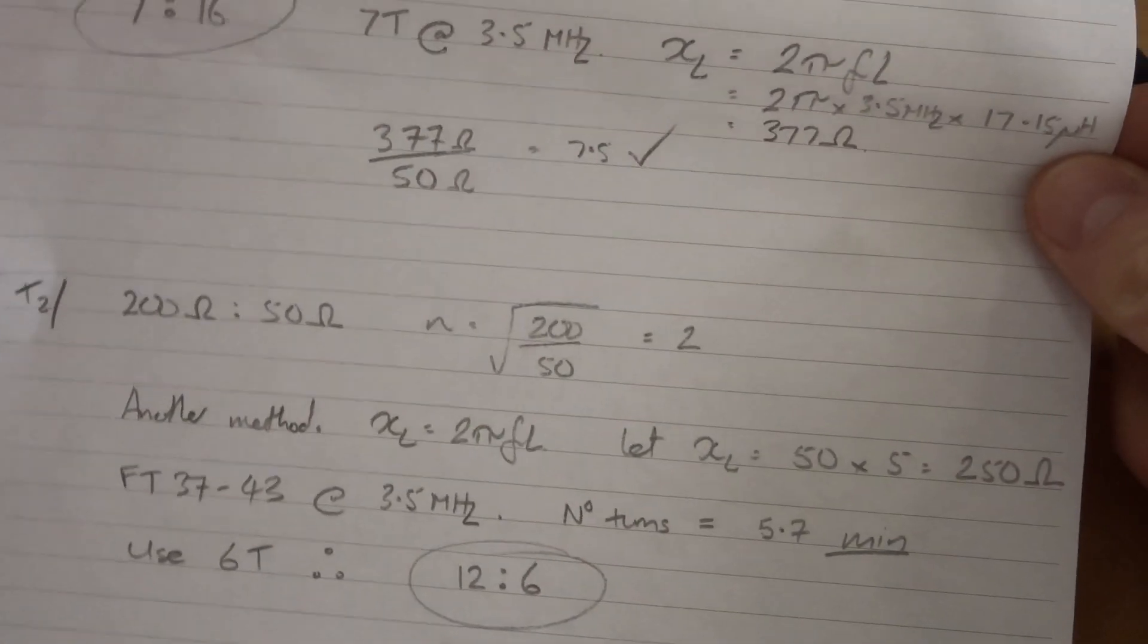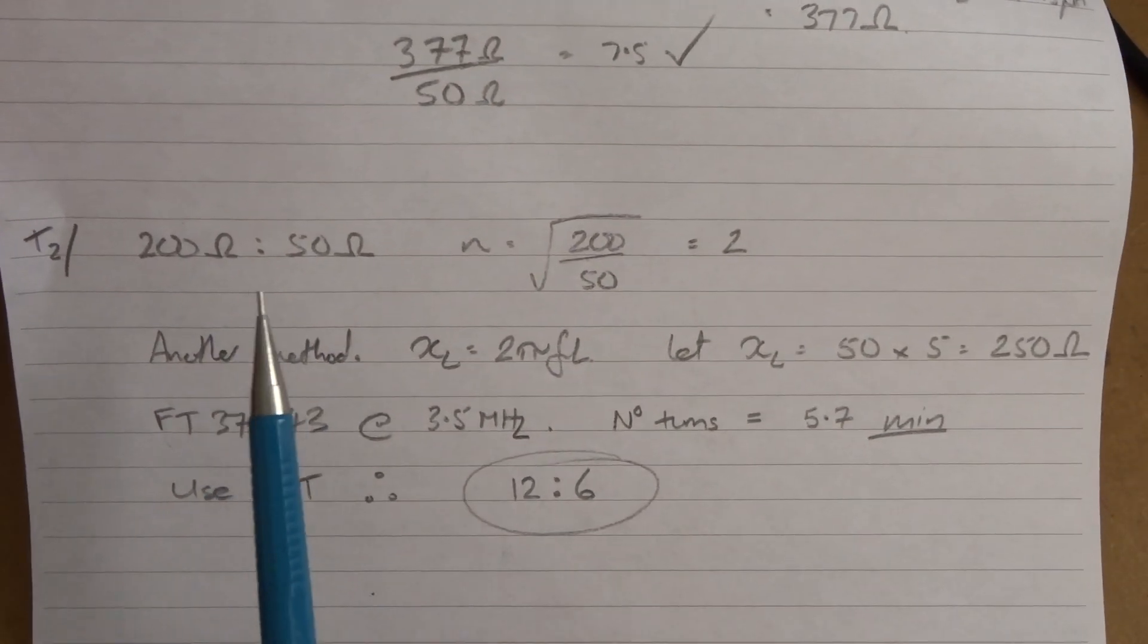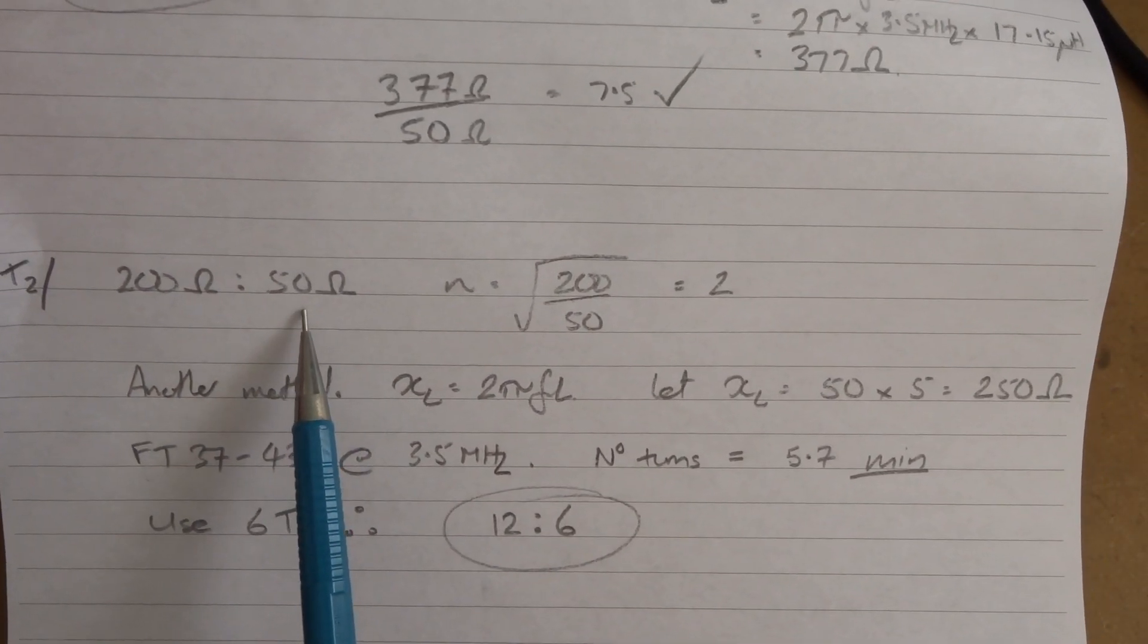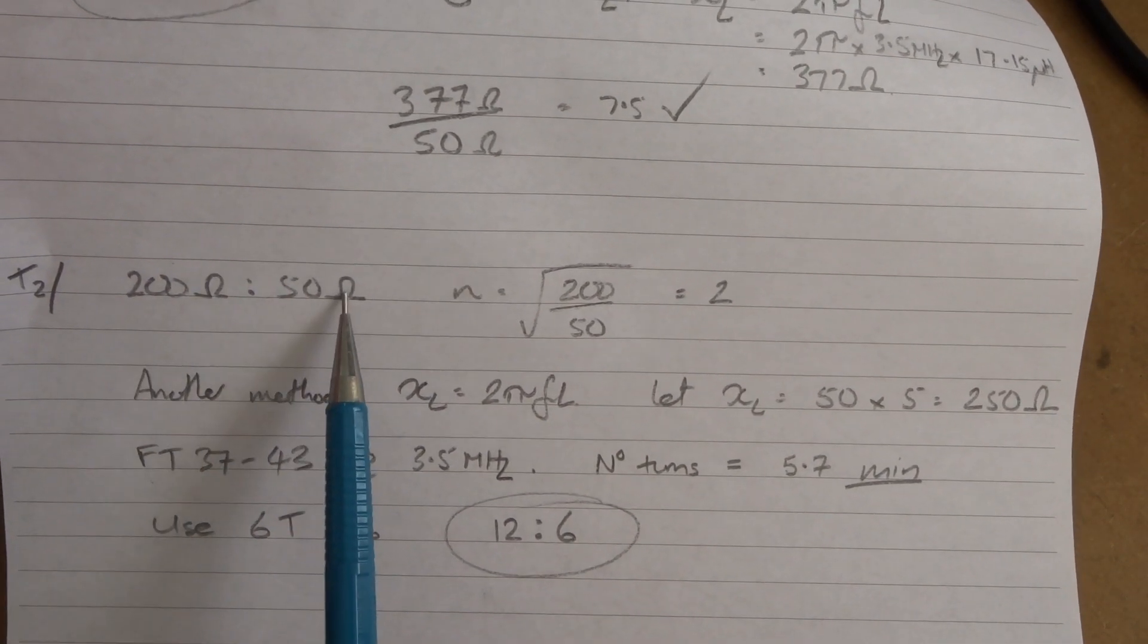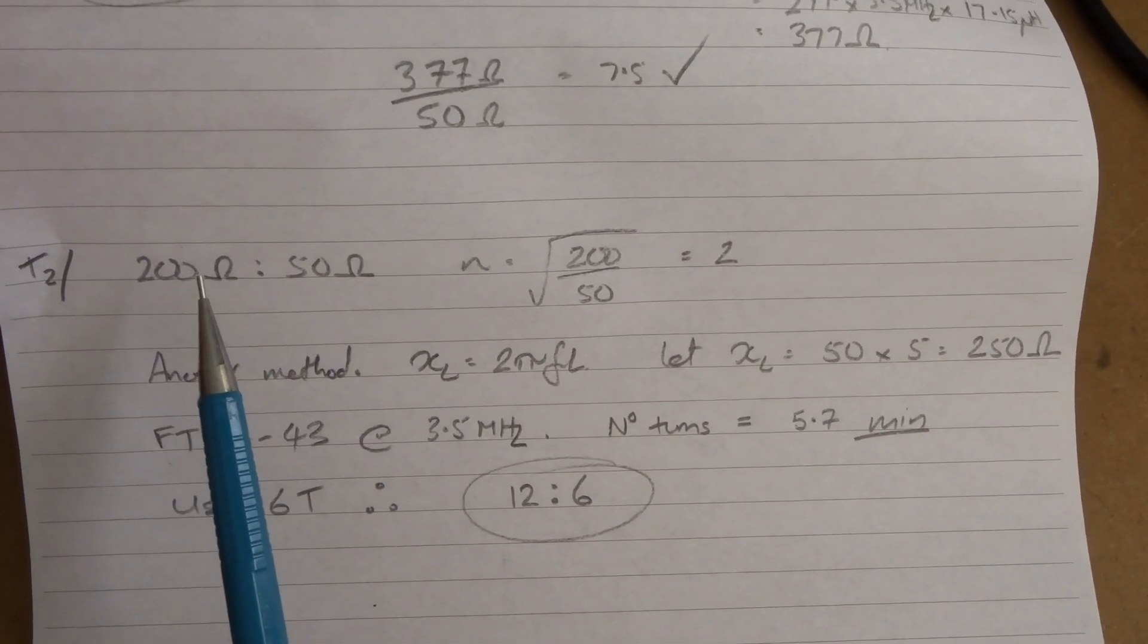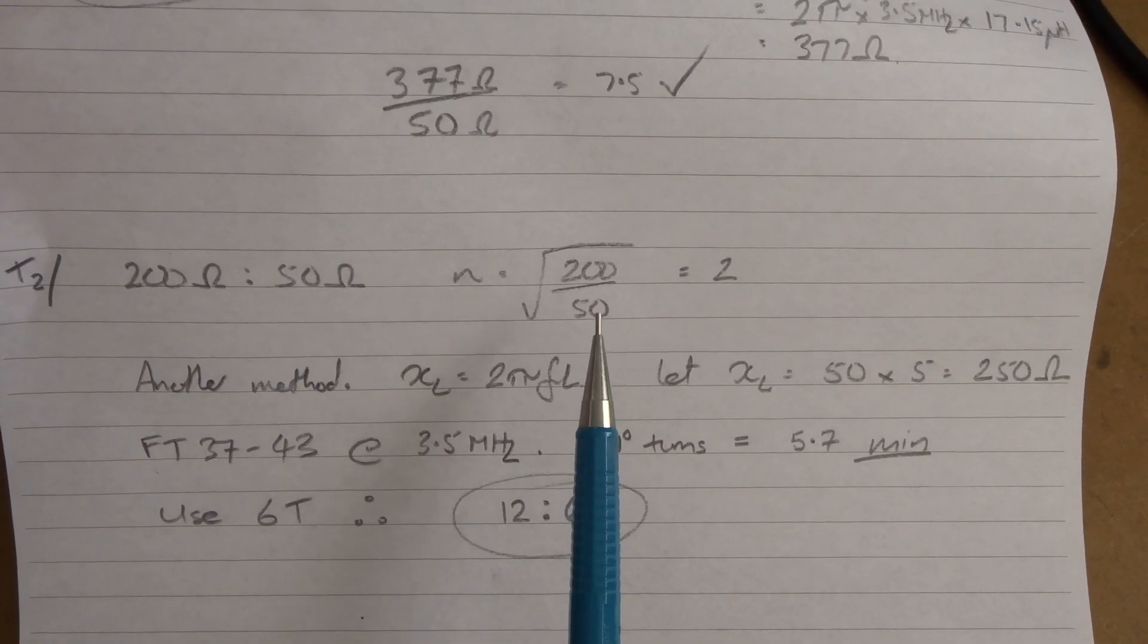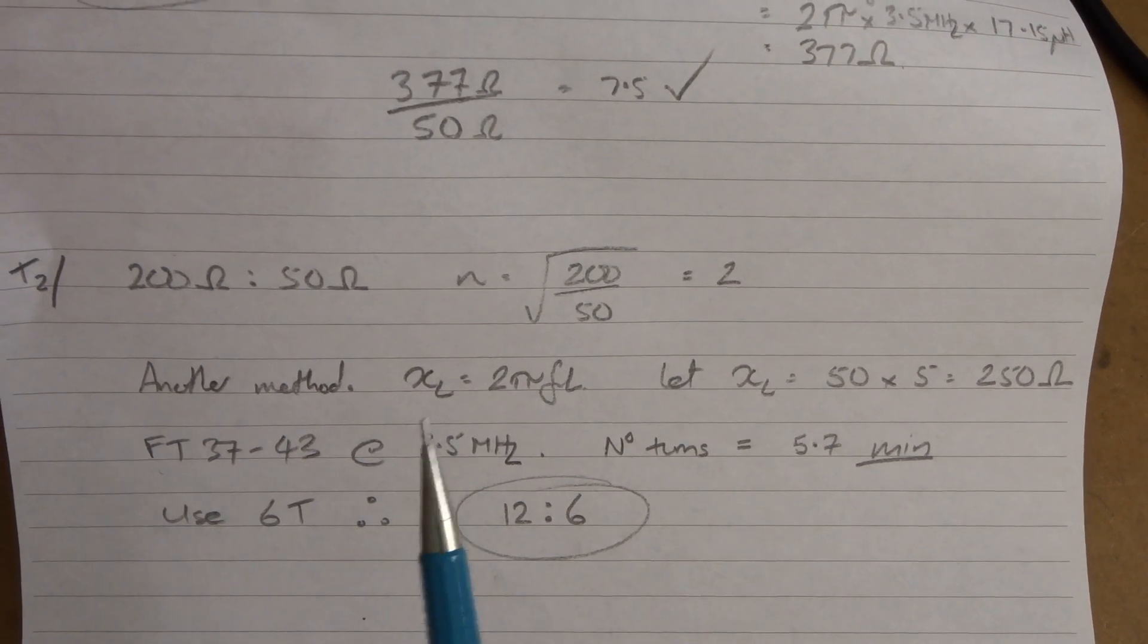Right, T2. T2 is going to be standard matching 50 ohms - the mixer that comes after this amplifier - and I want to present to the collector 200 ohms. So N equals the square root of 200 divided by 50, equals 2.